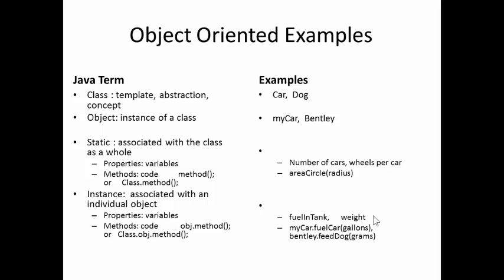If I want to apply a method, an object method, for example, fuel car, I have to specify which car I'm fueling. So I do this by invoking myCar dot fuelCar. And then as a parameter, I might say how many gallons am I adding to my fuel tank. Similarly, I might say Bentley, the name of my dog, dot feedDog with grams, how much dog food I am feeding Bentley.